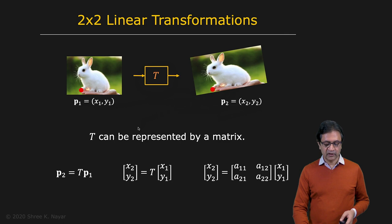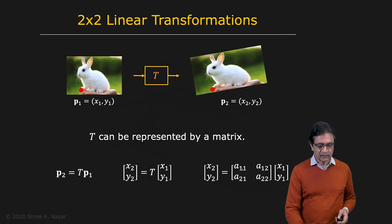So these kind of transformations can often be described using a two by two transformation matrix T. So you have X1, Y1 right here, multiplied by this transformation matrix T, which is given by this two by two matrix gives you X2, Y2. And we want to try and understand what are things that you can do to this matrix that give you different types of geometric warpings.